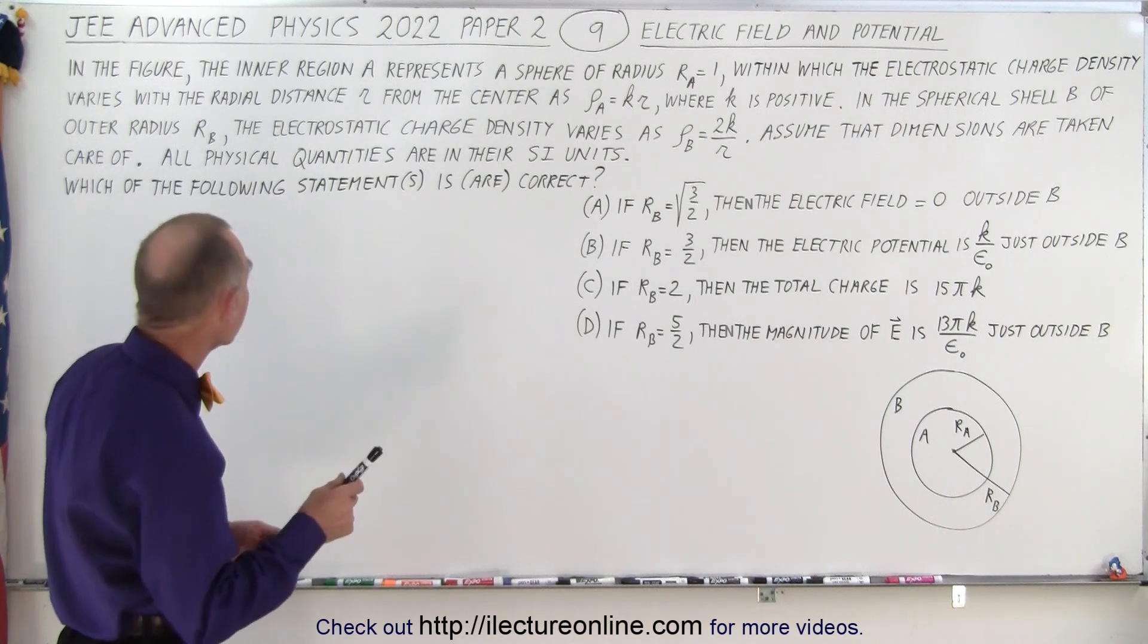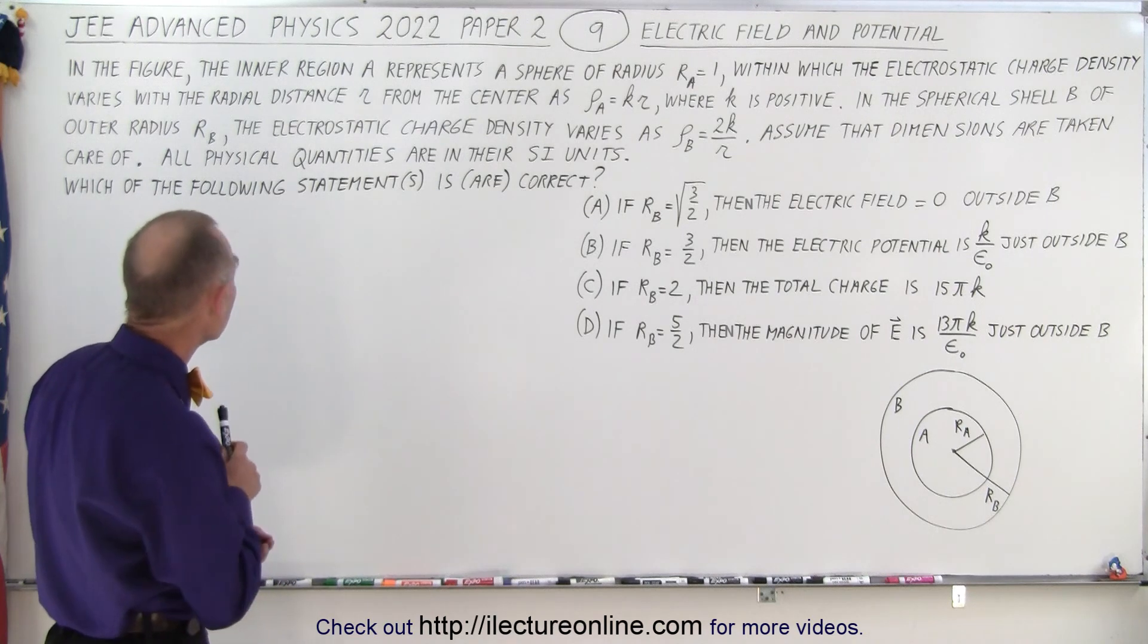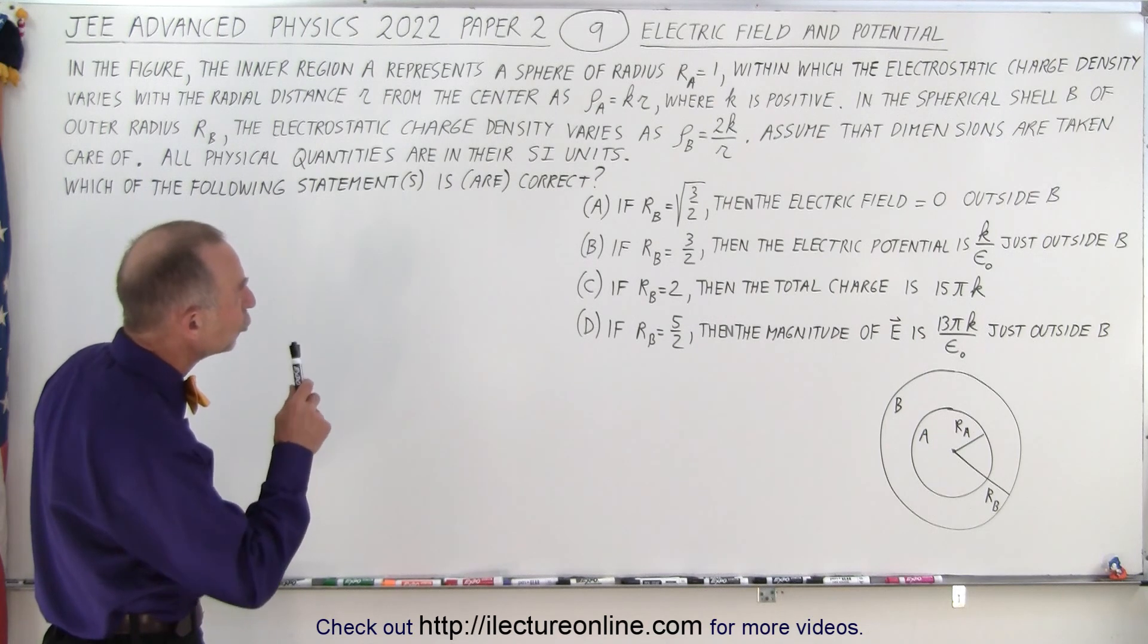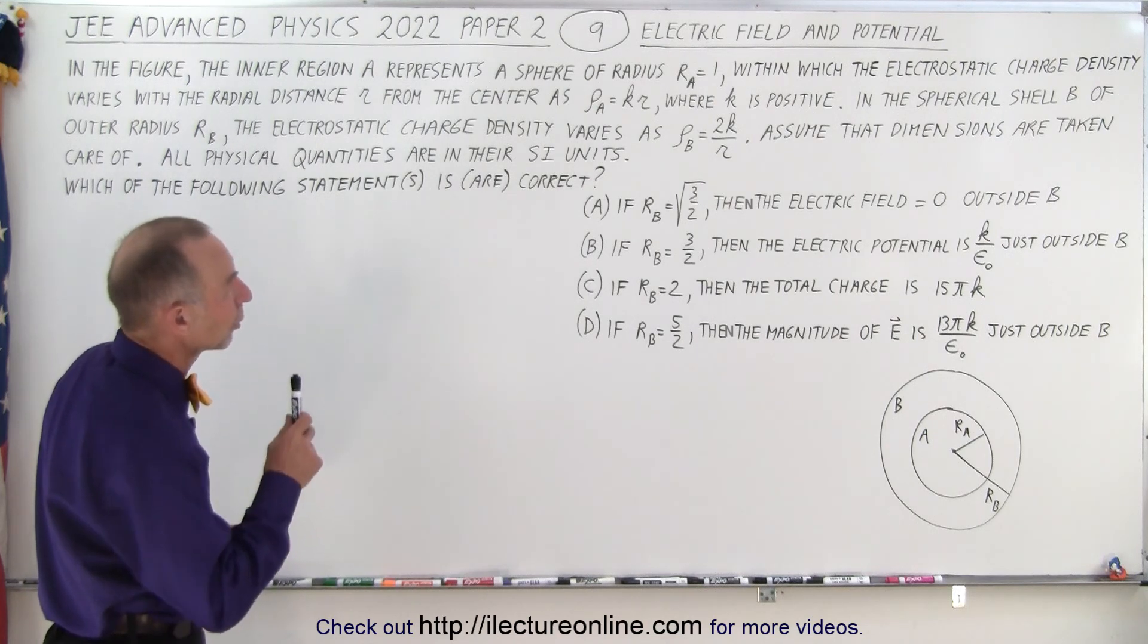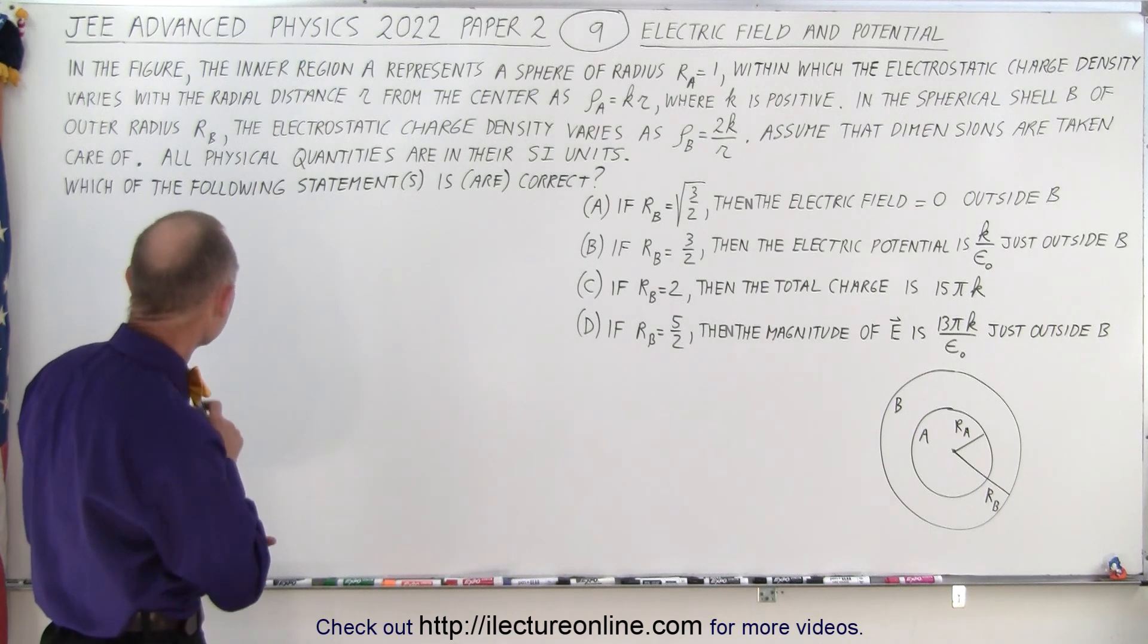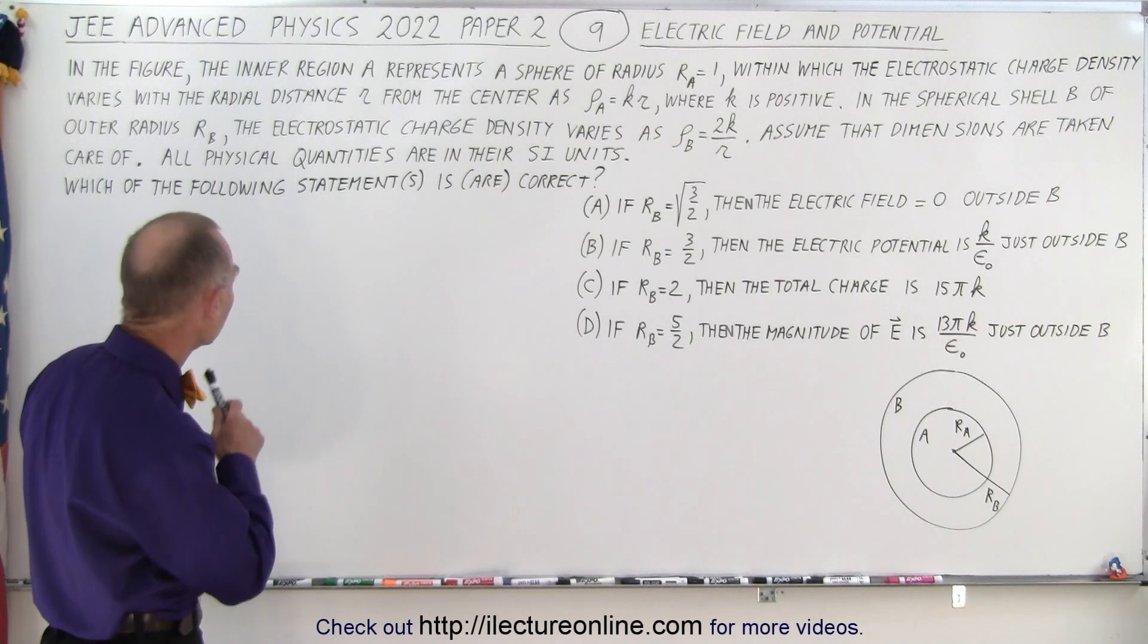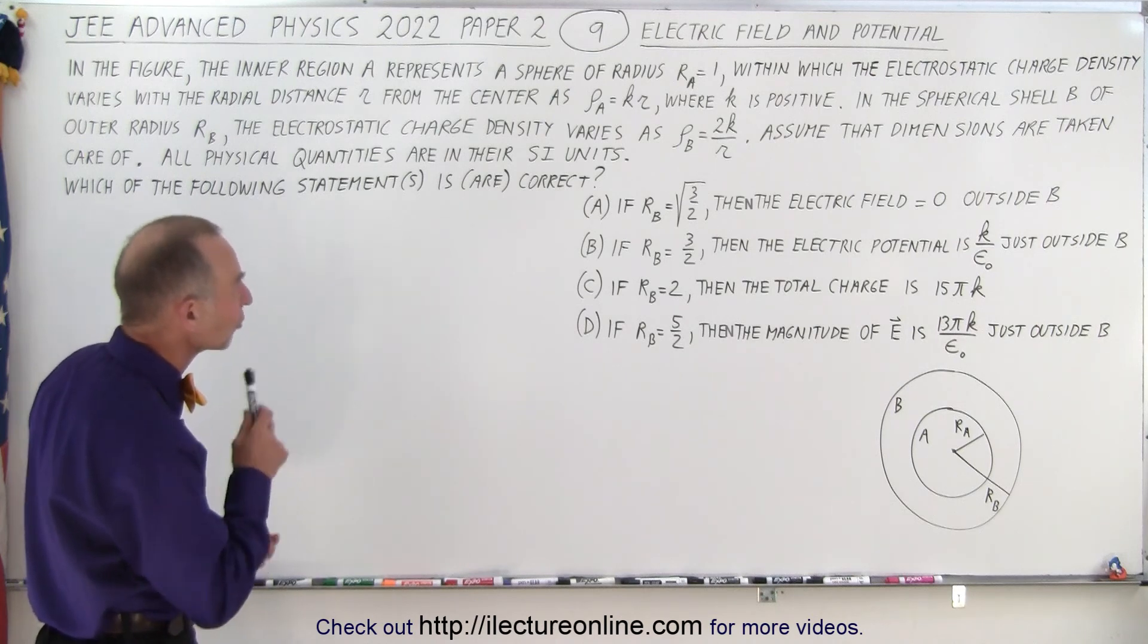In the spherical shell B of outer radius R sub B, the electrostatic charge density varies as density equals 2k over R. Assume that dimensions are taken care of. All physical quantities are in their SI units. Which of the following statements are correct?